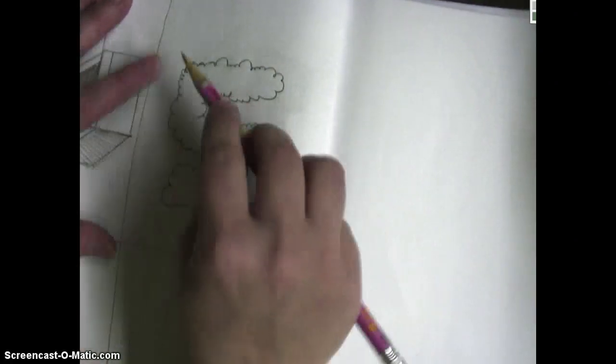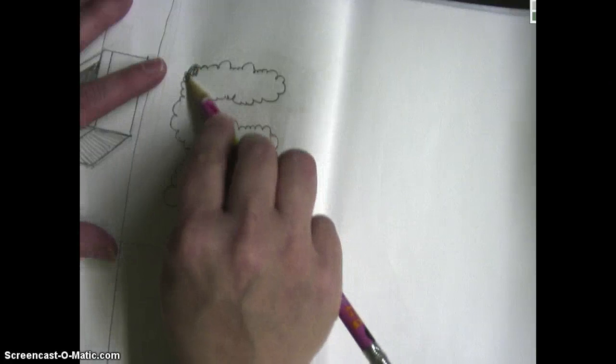Alrighty, let's add some shading and we'll be done. So what you're going to do is to create texture to look like a cloud texture, like a smoke texture. You're going to turn your pencil on its side. And how you're going to shade is you're going to use a circular motion.